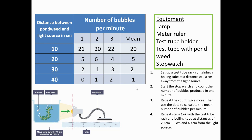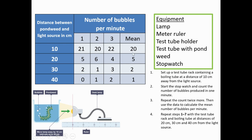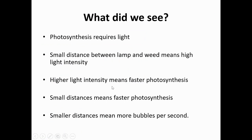What did we see from the data? Hopefully you can make this conclusion: photosynthesis requires light. We already knew this from last lesson, but the data supports it. Small distances between the lamp and the weed meant high light intensity, compared to a big distance meaning small light intensity and a small rate of photosynthesis. The higher the light intensity, the faster the photosynthesis. Smaller distances mean more bubbles per second; larger distances mean fewer bubbles per second.